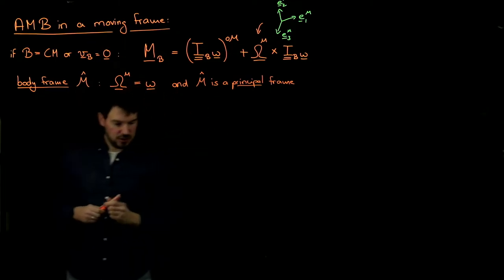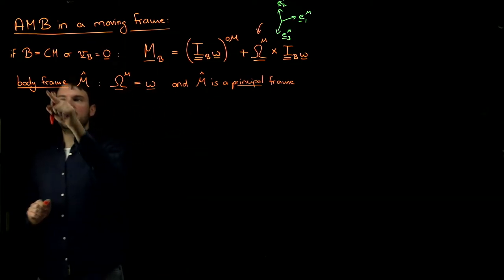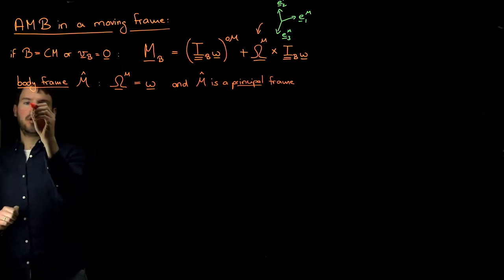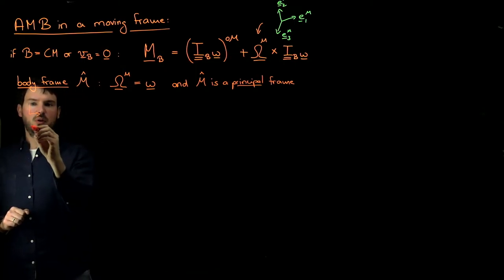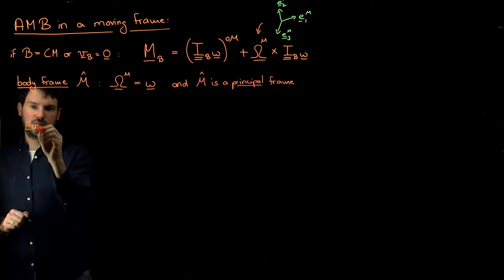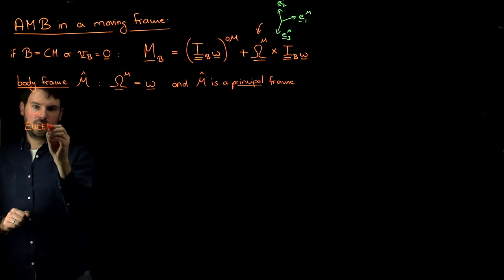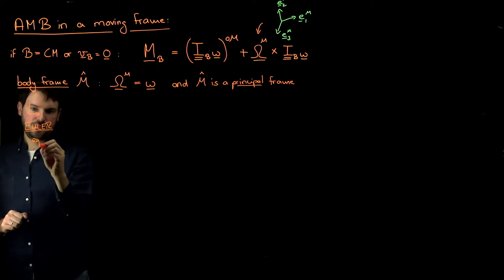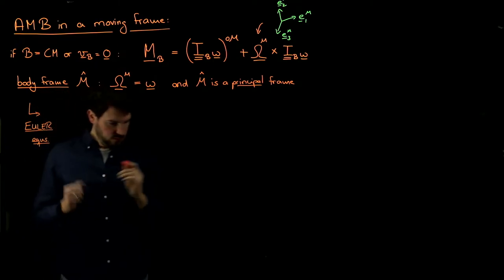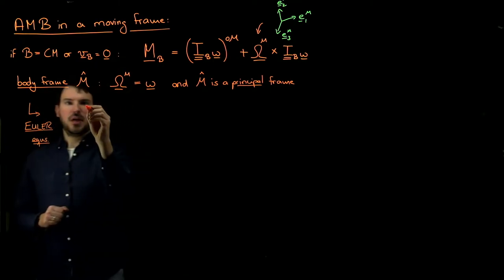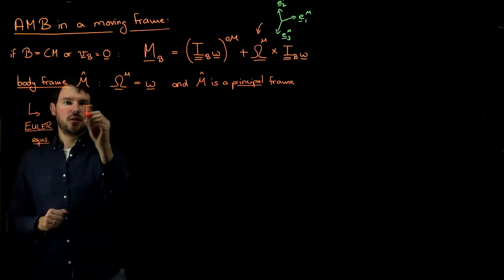So we want to find a principal frame in which I_B is diagonal, and we make sure that we rotate with the body. If these two conditions are satisfied, then in the body frame we derive what we know as the Euler equations. Let me just write them down.